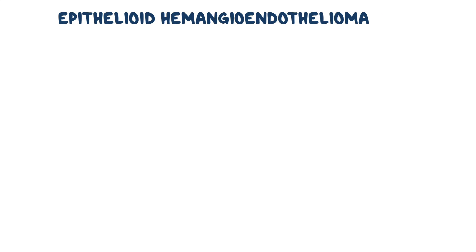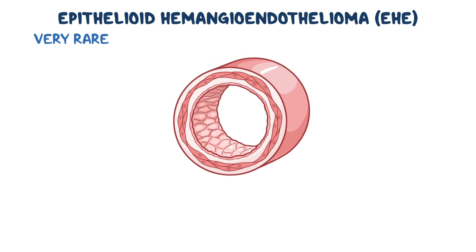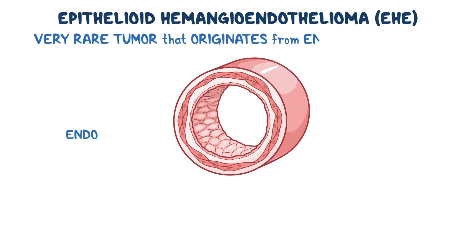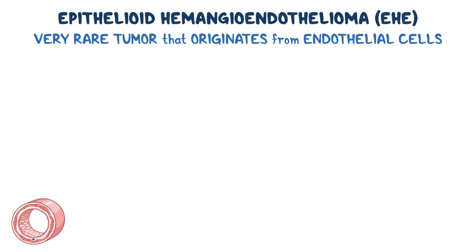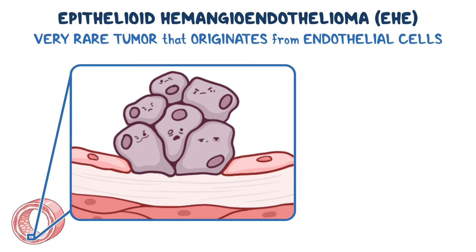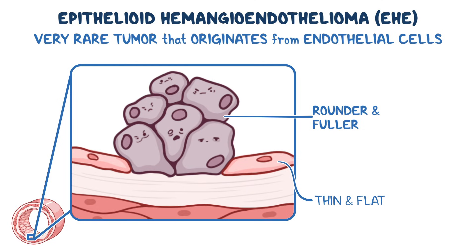Epithelioid hemangioendothelioma, or EHE for short, is a very rare type of tumor that originates from endothelial cells in the inner lining of blood vessels. When these cells become abnormal, they change their shape under the microscope. Instead of staying thin and flat, they become rounder and fuller, almost resembling the epithelial cells that line organs — hence the name epithelioid.